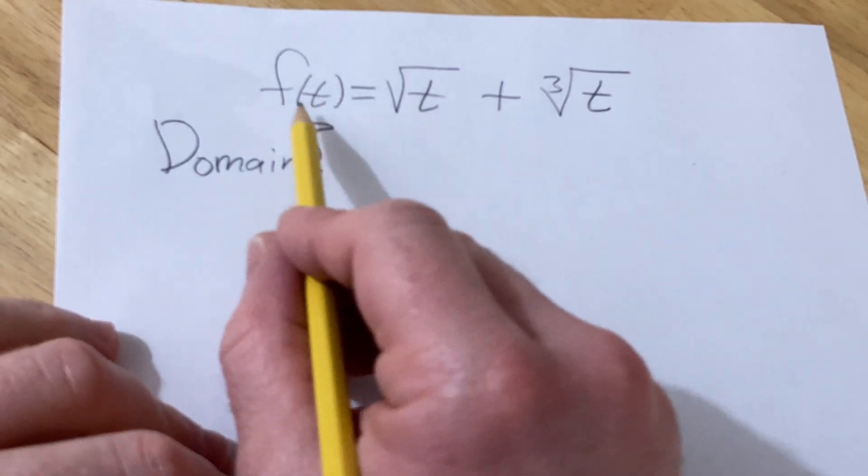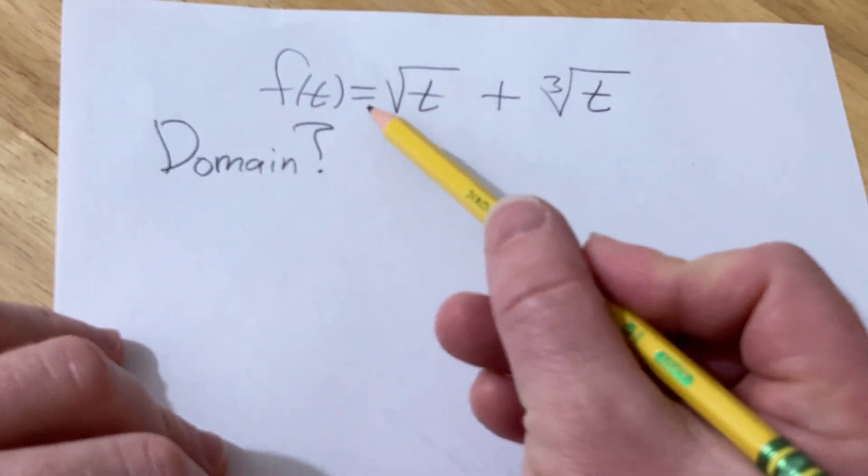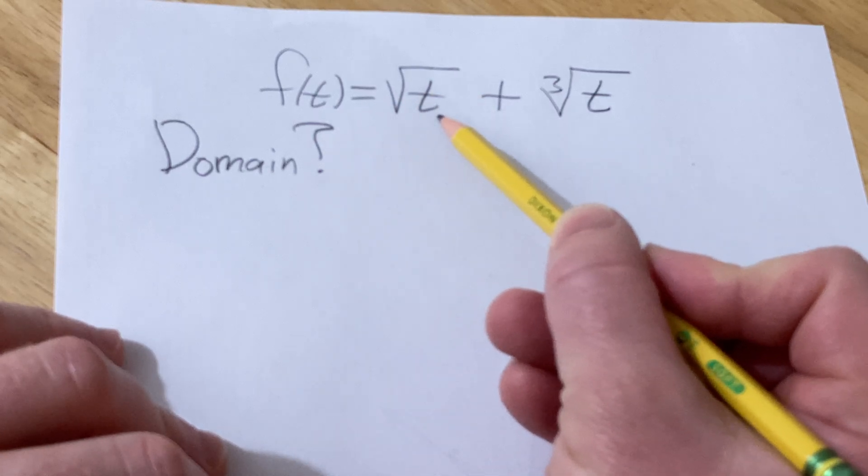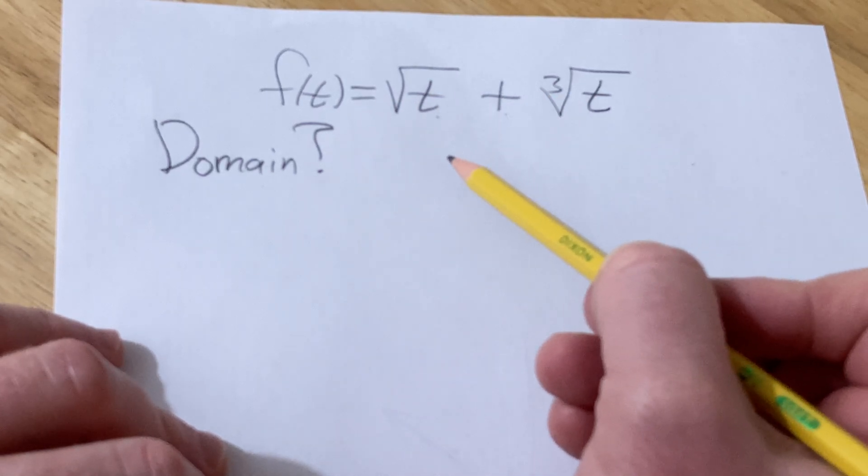Hello, in this video we're going to find the domain of this function. We have f(t) equal to the square root of t plus the cube root of t.